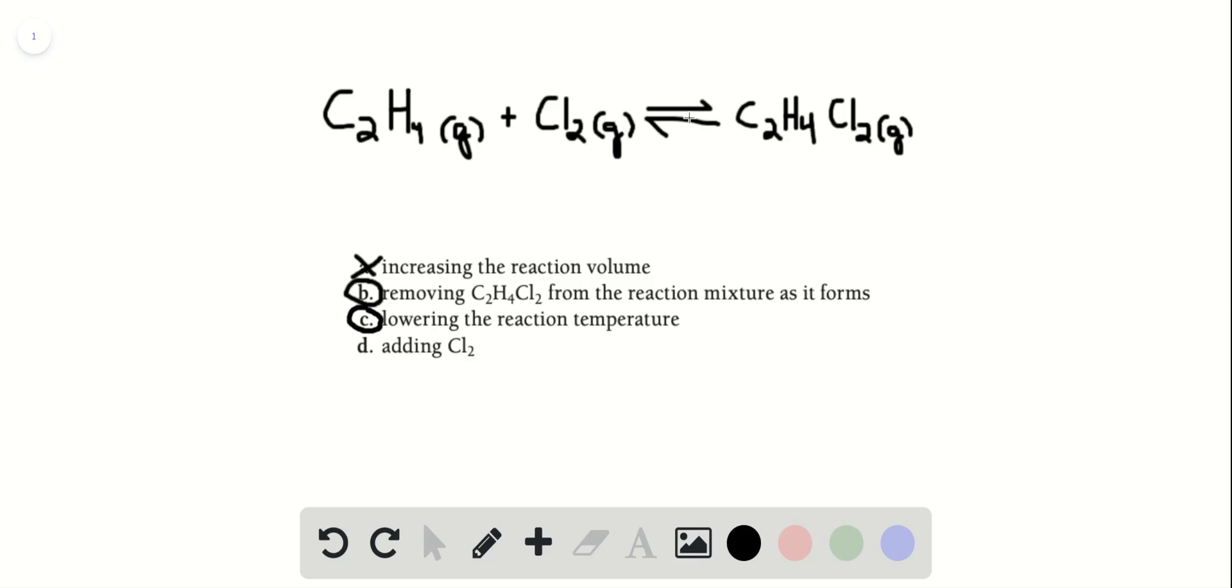And finally, D says adding more Cl2. This is the opposite of B and C. Instead of taking away from the products, if we add reactants, if you can think of this as a bucket again, this bucket would become too full, so it would overflow into the products.